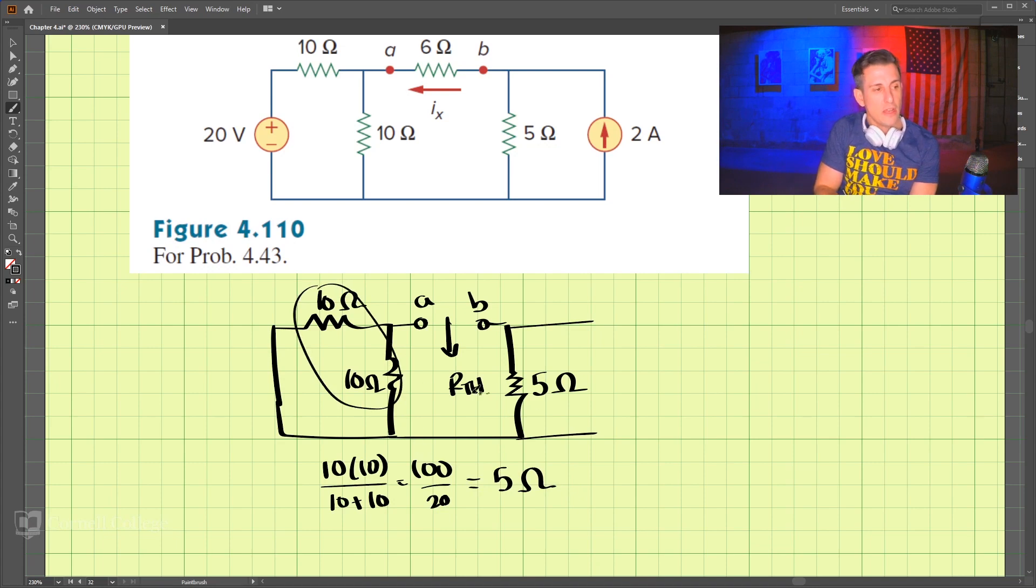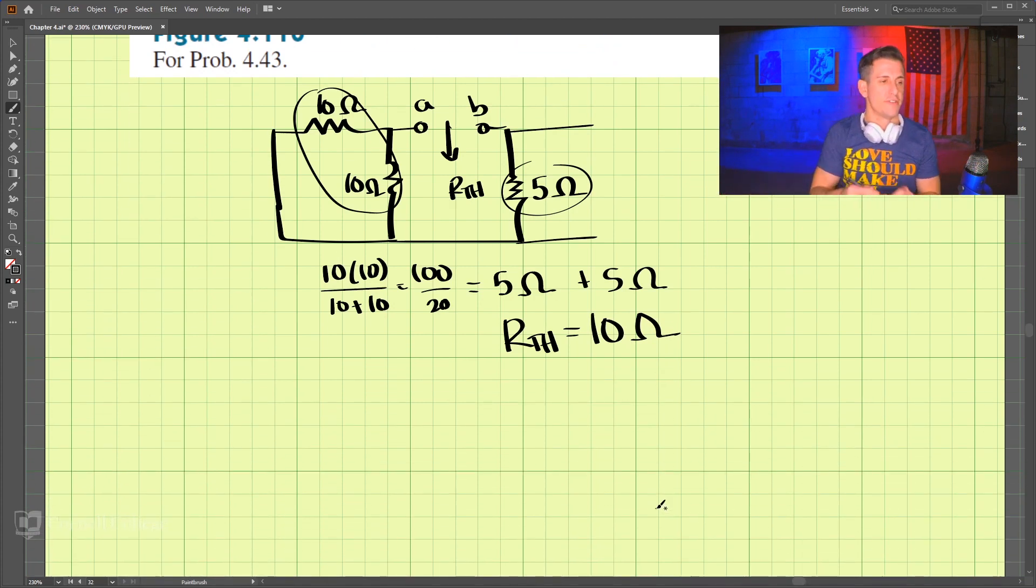And then when we combine those two, it is in series with this resistor 5. So we have plus another 5. So the total Thevenin resistance is 10 ohms. So we have found the Thevenin resistance.